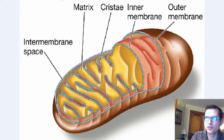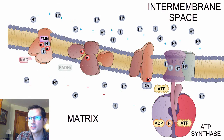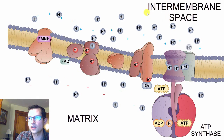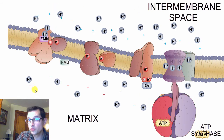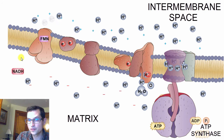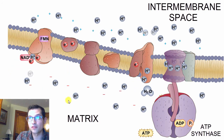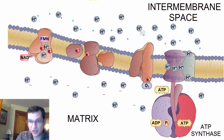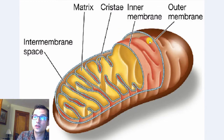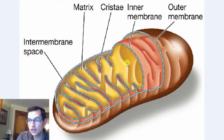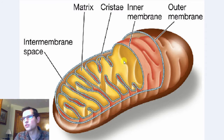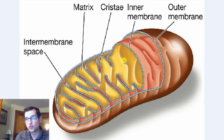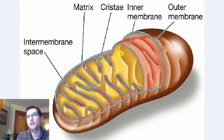Going back to our moving diagram: the matrix is down here, and the intermembrane space is up here. The NADH seems to be coming from the matrix, and the FADH2 also seems to be coming from the matrix — and that's no mistake, this animation is doing a good job. It turns out that FADH2 and NADH are both produced, mostly, in the mitochondrial matrix. There are some other places where these are made, but the majority of NADH and FADH2 is produced in the mitochondrial matrix itself.